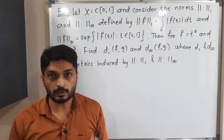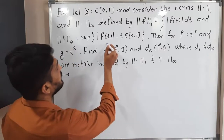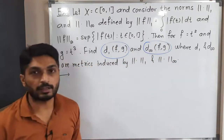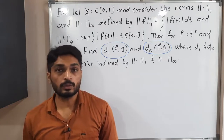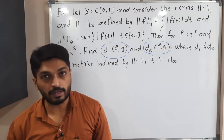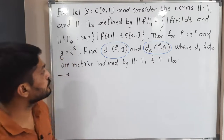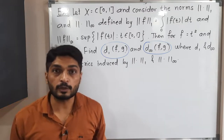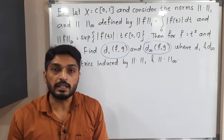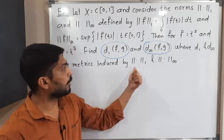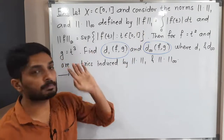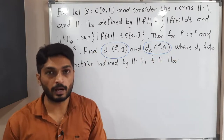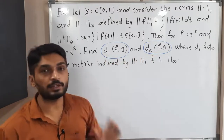So what is our target? We have to find D₁(f,g) and D∞(f,g). D₁ and D∞ are metrics induced by norm one and norm infinity respectively, and the definitions of norm one and norm infinity are provided. We are given f(t) = t² and g(t) = t³, and we simply have to find D₁(f,g) and D∞(f,g).